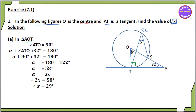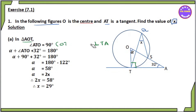So if you want to find the radius, the radius is 7.2. The angle is 90 degrees. The radius is 10.